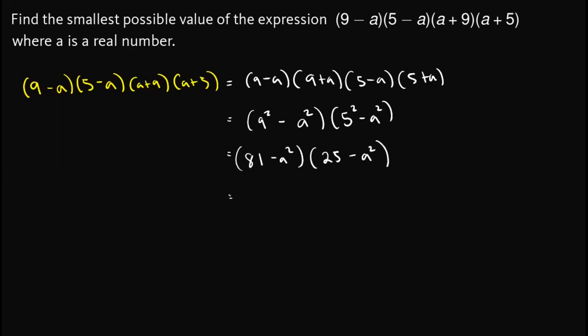And then from here, we simply apply the FOIL method or the multiplication of binomials. So we have first is 81 times 25, minus the outer, this one, so that one is 81a squared.